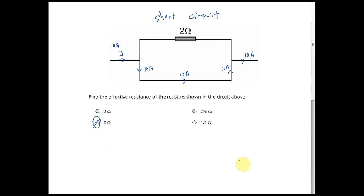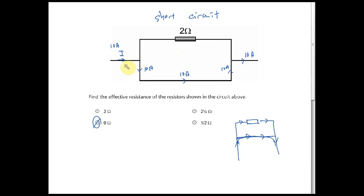In a short circuit, current bypasses the resistor entirely. For example, if a low-resistance path connects two points, all current flows through it. This is very dangerous: with no resistance, current becomes very high, wires overheat, burn the plastic insulation, and can cause a fire. You may see white smoke immediately.